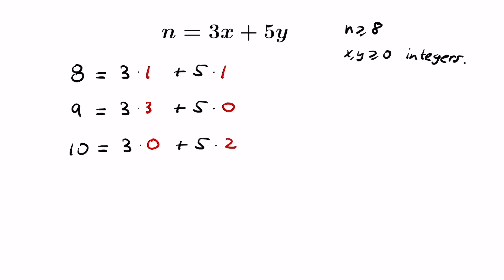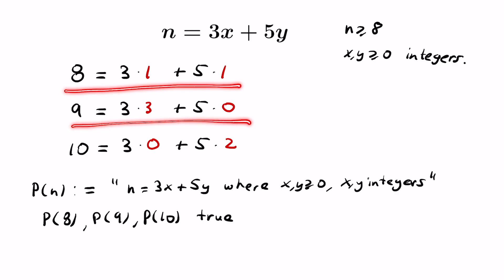So the numbers 8, 9, and 10 can be written in this form where x and y are non-negative integers. What about integers that are larger than these? We can think about creating a statement p of n that declares that n can be written in this fashion we just talked about. So the fact that we can write 8, 9, and 10 in these ways means that p of 8, p of 9, and p of 10 are all true.